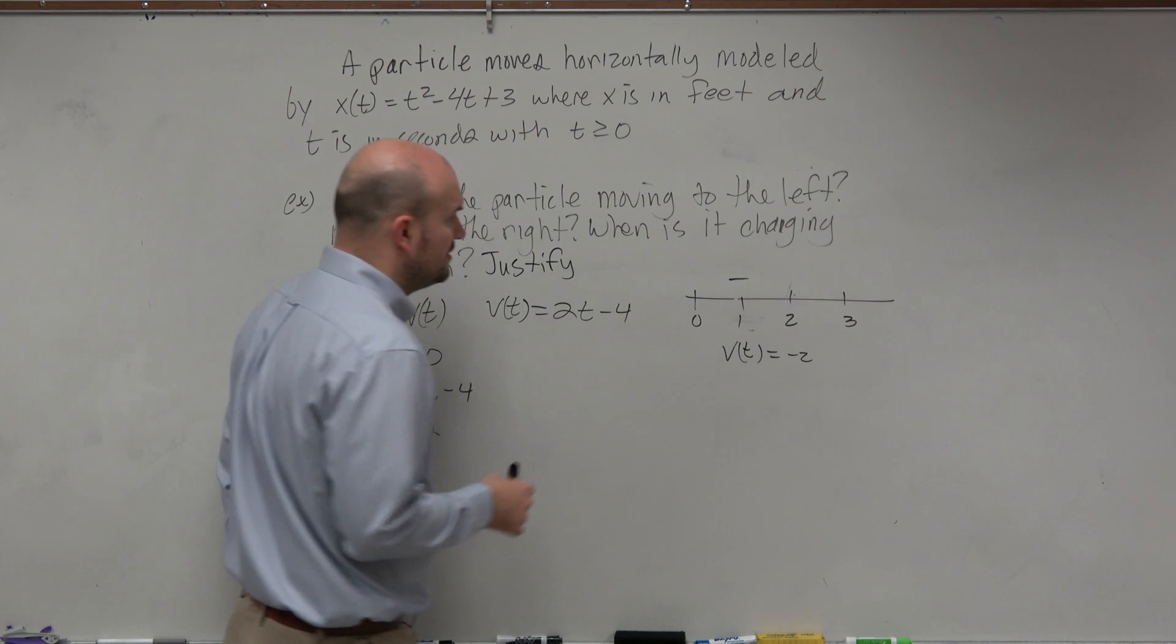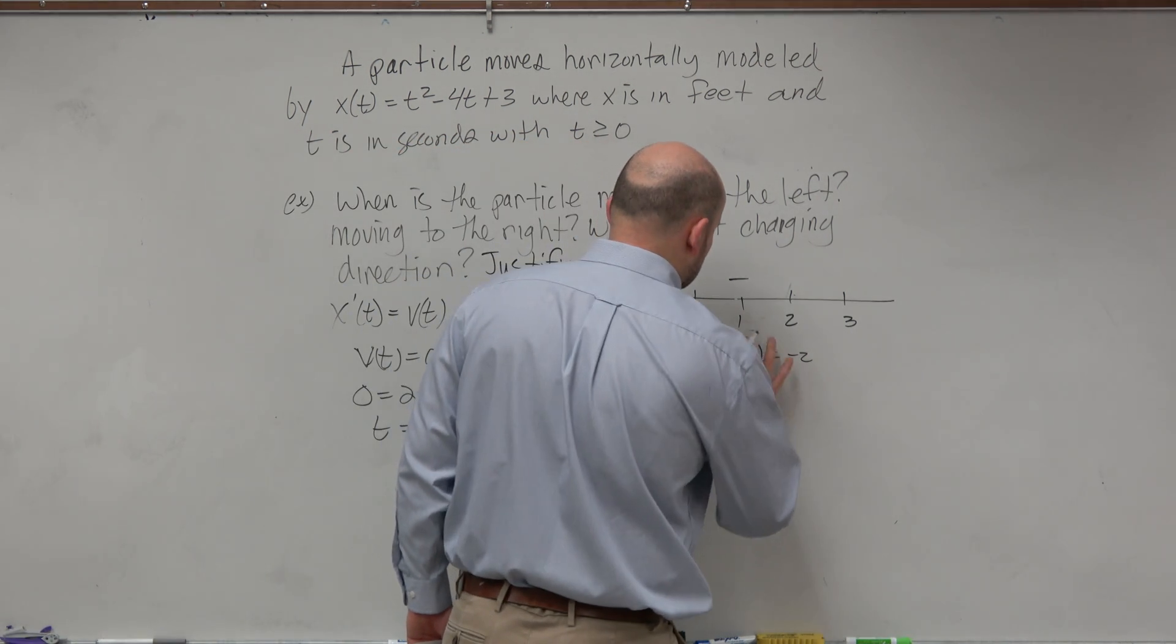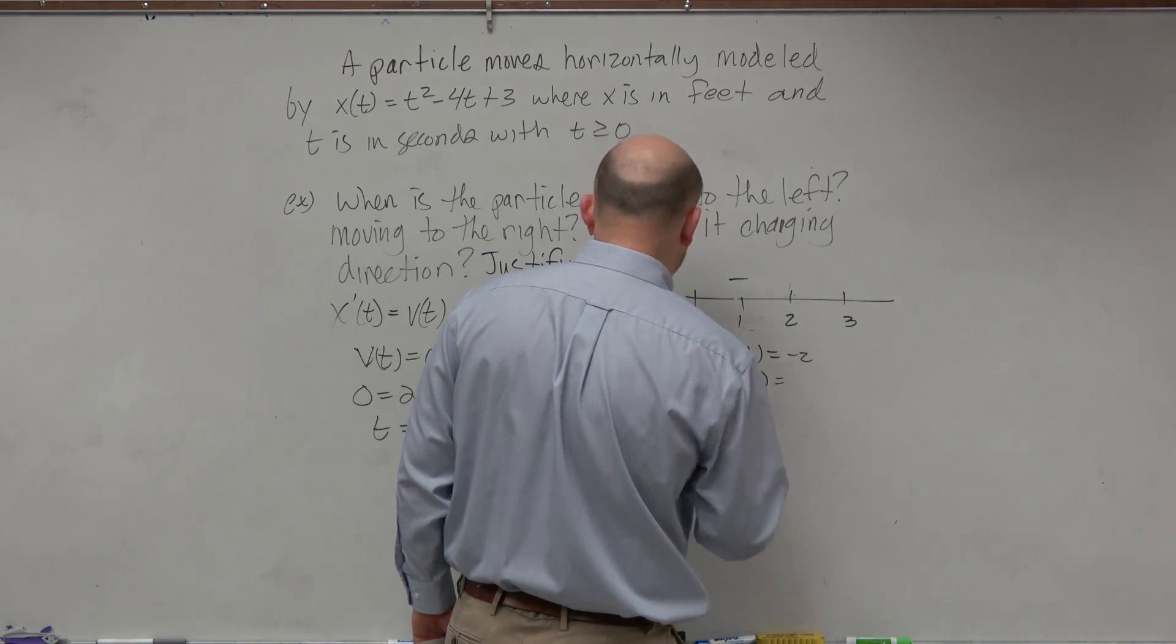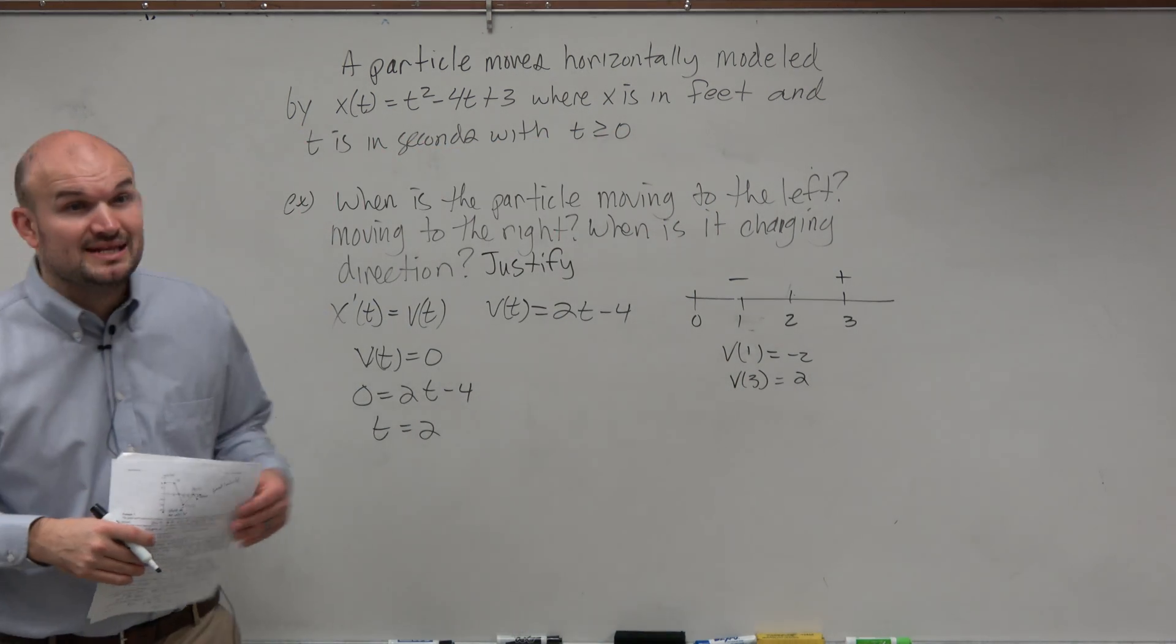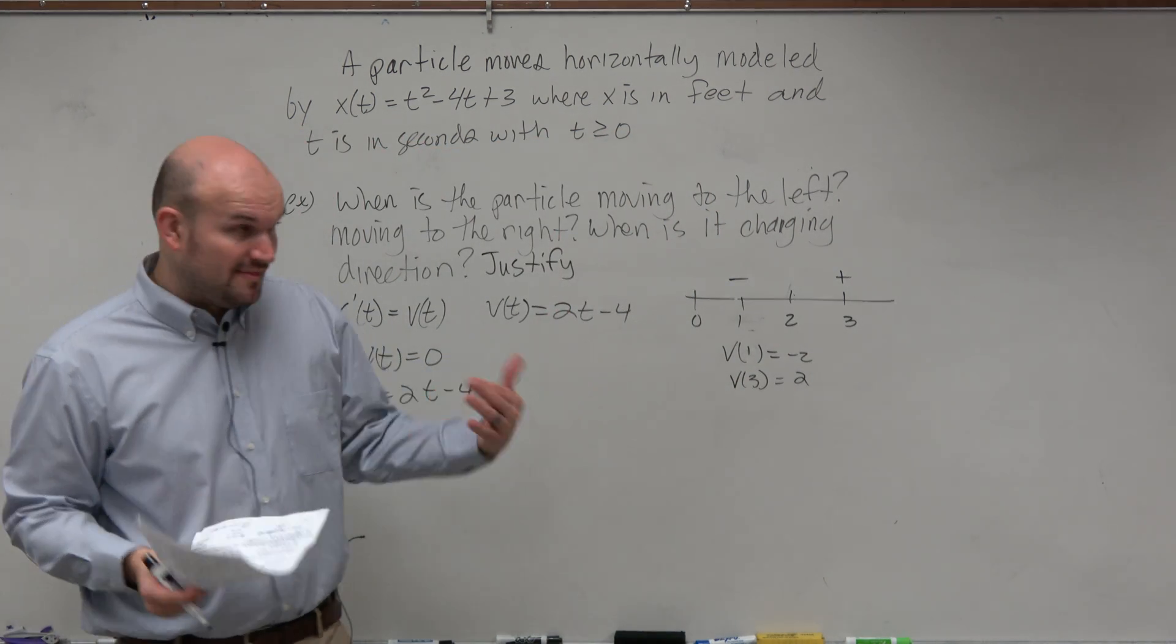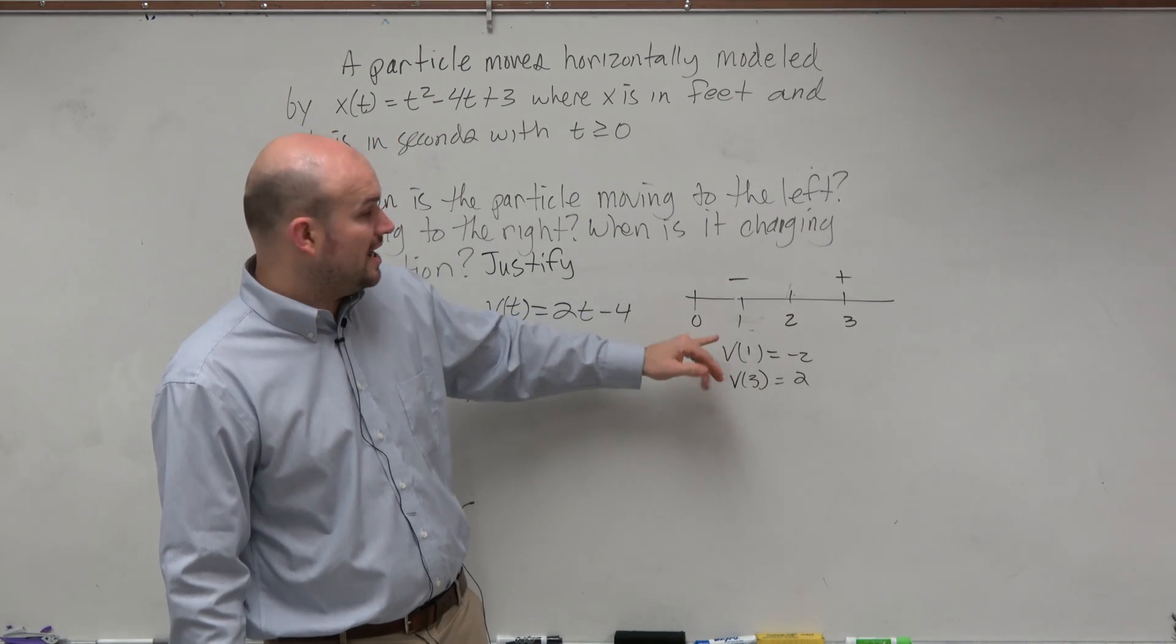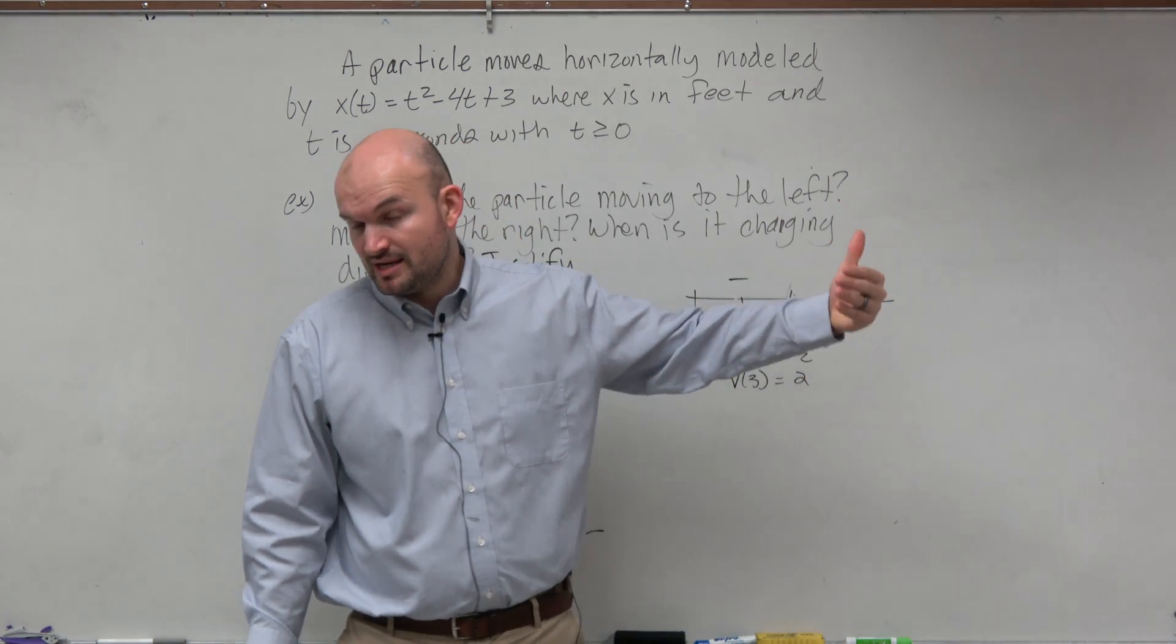v sub 1 is 2 minus 2 is going to equal a negative 2. So therefore, that's negative. And then let's just pick 3. Sorry, negative v sub 1. And then let's plug in v sub 3. And when we plug in 3, we get positive 2. So it's positive. So it is changing from a negative to a positive. And therefore, that is enough that we can look at it and say, all right, the particle is changing now. From 0 to 2, it's moving to the left. And then from 2 to 3, it's moving to the right.